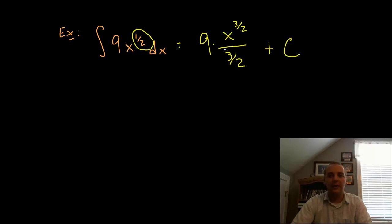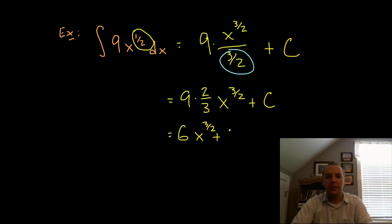Because we don't normally like to divide by a fraction, it doesn't look very good. So what we do more commonly is in a problem like this, you could multiply by the reciprocal. It's an algebra step you probably learned in your algebra classes. So this would be 9 times 2 thirds x to the 3 halves plus c. And that reduces to 6x to the 3 halves plus c.